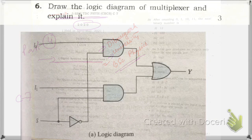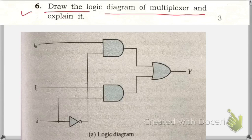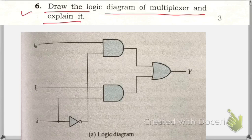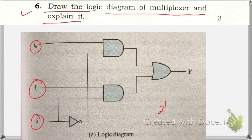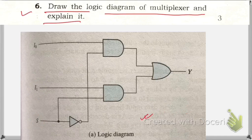Question number six: draw the logic diagram of a multiplexer and explain it. A multiplexer is a combinational circuit that selects binary information from one of many input lines and directs it to a single output line. The selection of a particular input line is controlled by a set of selection lines. Normally there are 2^n input lines for n selection lines. With one selection line, we have 2^1 = two input lines. This is the logic diagram of a two-to-one line multiplexer.